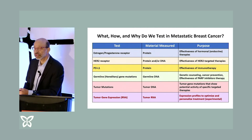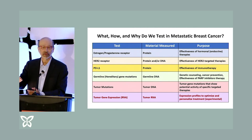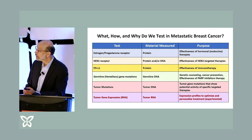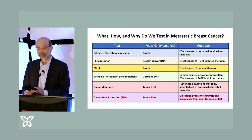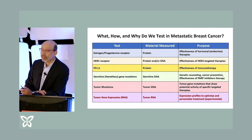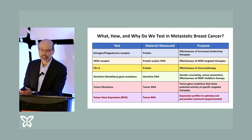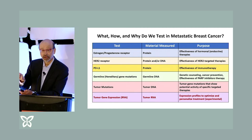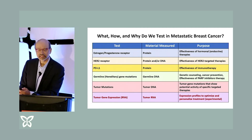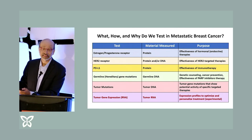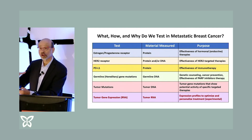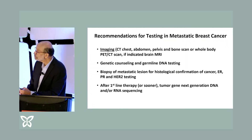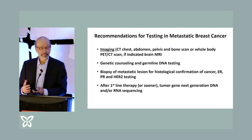There are other mutations that give cells a growth advantage and also can point us to a drug. And then there are RNA expression profiles — these look at how multiple genes are expressed. Right now they're used mostly in early stage breast cancer; you've probably heard of Oncotype DX. But we're increasingly developing these signatures to be used in advanced breast cancer to tell us which drugs might be best. That's an overview of the different tests that we do.